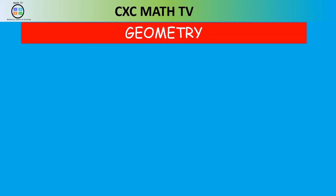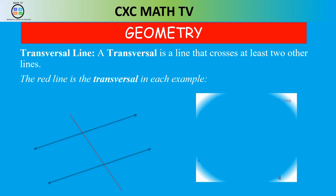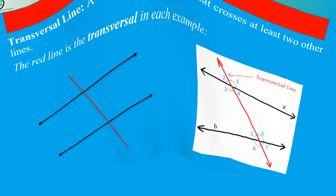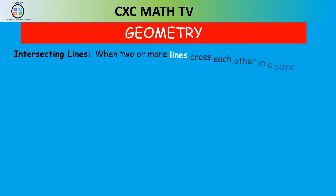There's a new type of line we're going to be introduced to: the transversal line. A transversal line is a line that crosses at least two other lines. In these examples we use the red line to indicate the transversal. We have two black lines, and the red line is the transversal because it intersects those two other lines. When two or more lines cross each other at a point, they are called intersecting lines.